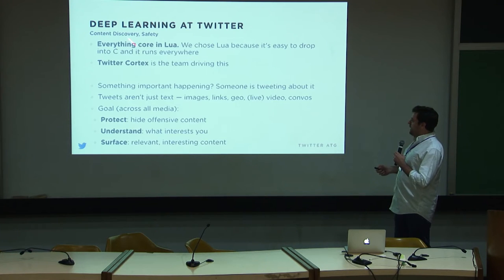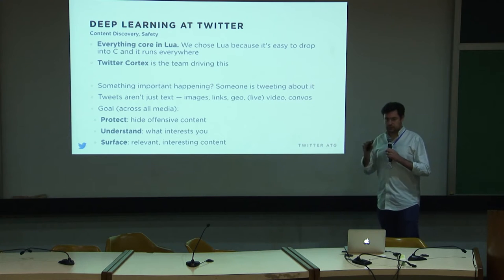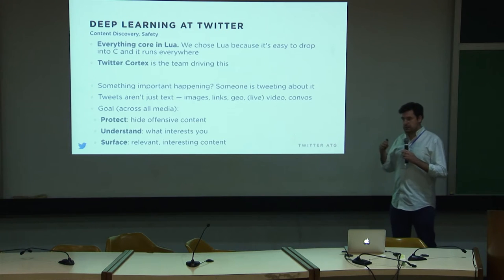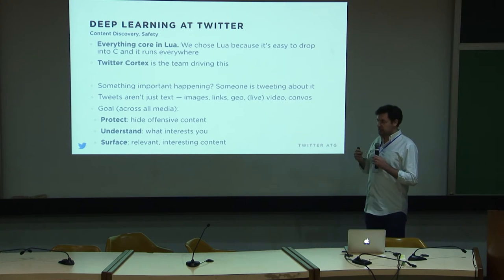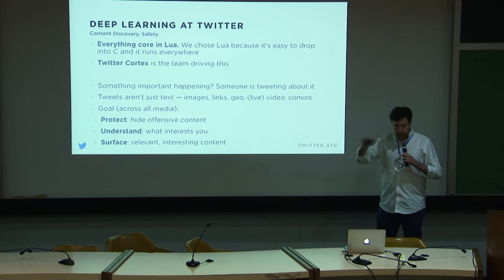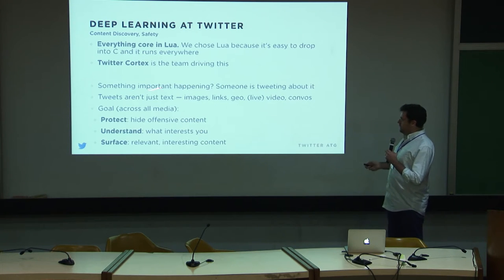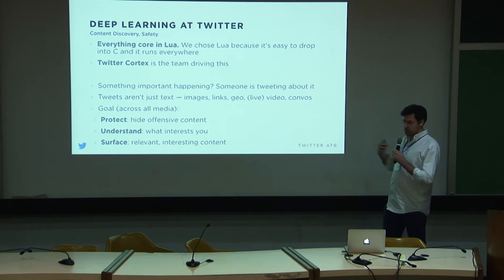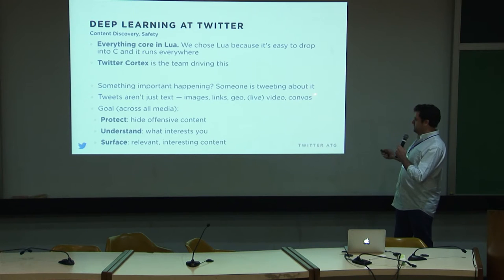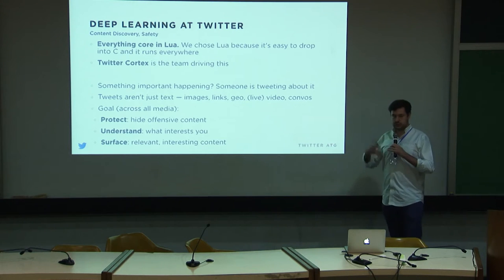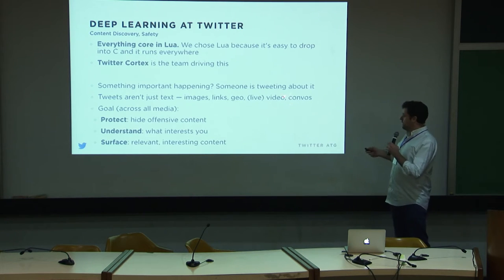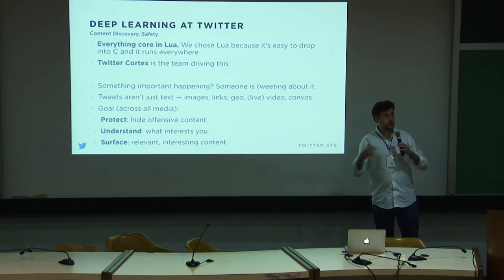For deep learning at Twitter, everything we do with deep learning is written in Lua — both production and prototyping. Every image in Periscope, our live video platform, and tweets go through our deep learning stack, so Lua touches literally everything on Twitter. There's a team called Twitter Cortex, the applied machine learning research group at Twitter, that's really driving this. Tweets aren't just text anymore — they're images, links, location, potentially live video, embedded in threaded conversations.